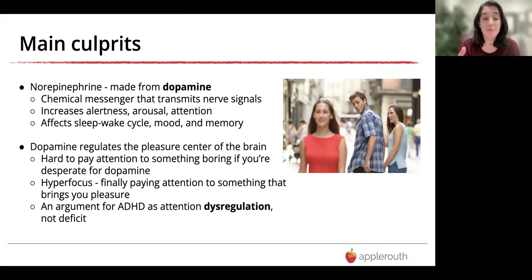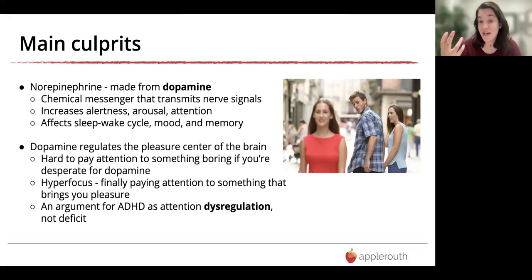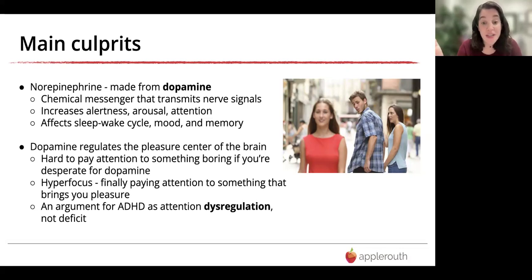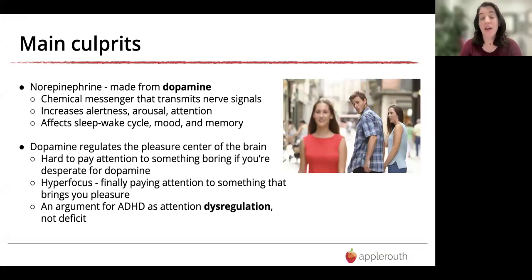Dopamine regulates the pleasure center of the brain. If you don't have a lot of dopamine, it's really hard to pay attention to something that doesn't naturally interest you — your brain is seeking something more pleasurable. The flip side is hyperfocusing: when you finally get to pay attention to something that brings you pleasure, you might stay up going down a Wikipedia rabbit hole until four in the morning because you're finally getting that dopamine hit. That's why I personally like to look at ADHD not as an attention deficit disorder but as an attention dysregulation disorder.